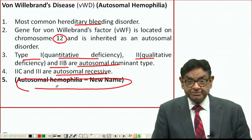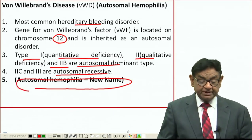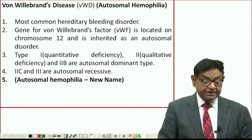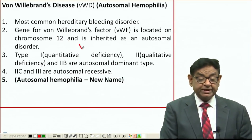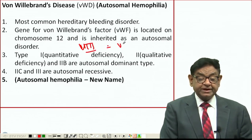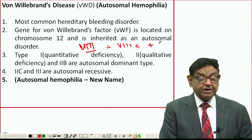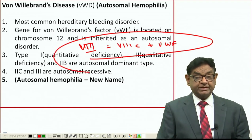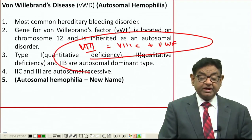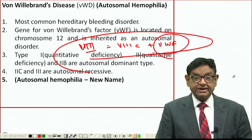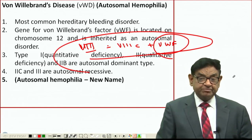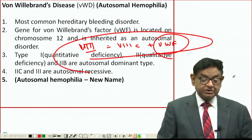Before I proceed further, let me tell you some basic concepts about Factor 8. Factor 8 is not a single entity — it is a combination of two parts: Factor 8C plus von Willebrand factor. These two together make Factor 8. Von Willebrand factor is involved both in clotting as well as in platelet plug formation.